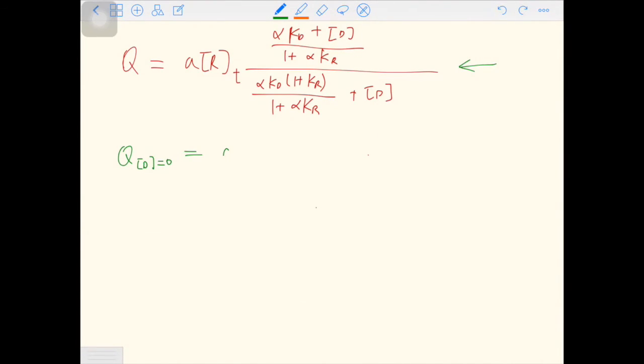And you have a times RT times alpha KD over 1 plus alpha times KR. And on the bottom you have alpha times KD over the same denominator.